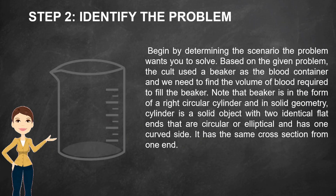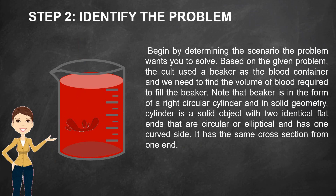Step 2: Identify the problem. Begin by determining the scenario the problem wants you to solve. Based on the given problem, the cult used a beaker as the blood container and we need to find the volume of blood required to fill the beaker. Note that a beaker is in the form of a right circular cylinder. In solid geometry, a cylinder is a solid object with two identical flat ends that are circular or elliptical and has one curved side. It has the same cross section from one end.